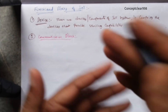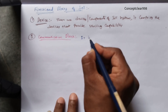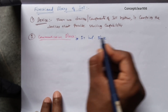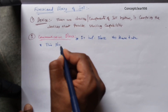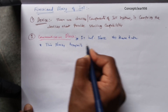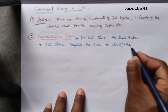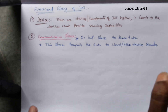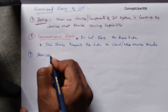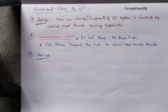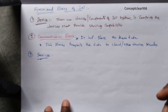The communication block is a very important block. It transmits data to the cloud or other devices securely. The third block is Services. Services means IoT devices provide a lot of services to control and monitor the devices.